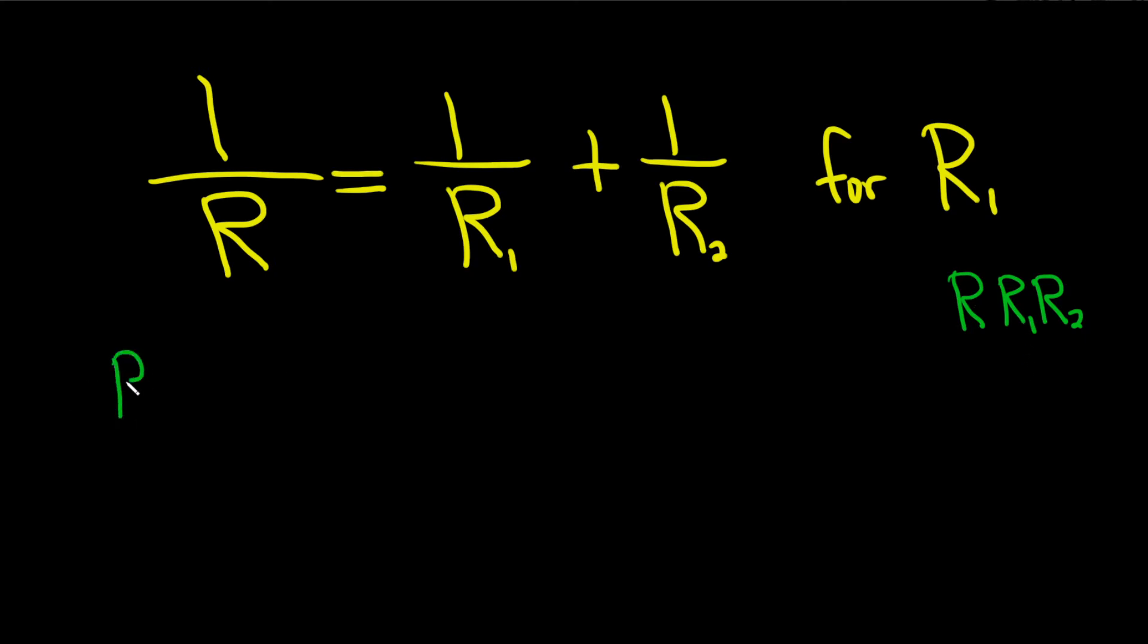On both sides we'll just put R, R sub 1 or R1, and then R2 times 1 over R. And then on the right hand side, same thing. So R, R sub 1, R sub 2. And technically it's in parentheses here, so I'll put the parentheses. We'll have to distribute it in the next step.